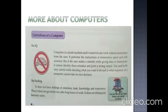Limitations of a computer. Computer has no IQ. Computer is a dumb machine. It cannot do any work without instructions from the user. If the user makes a mistake while giving data or instructions, it cannot identify those mistakes and give a wrong output. You need to be very careful while deciding what you do you want and in what sequence, as a computer cannot take its own decisions.